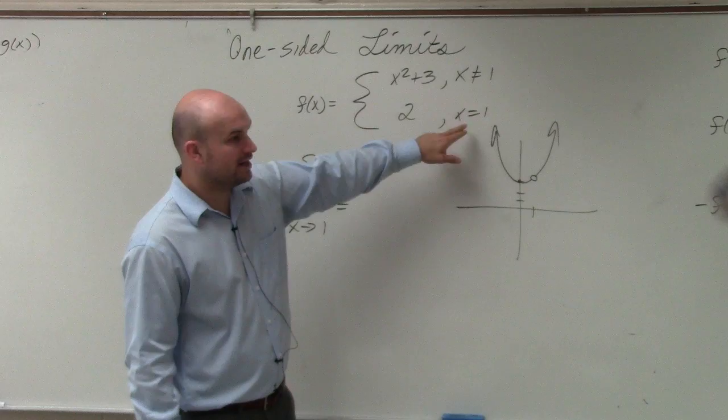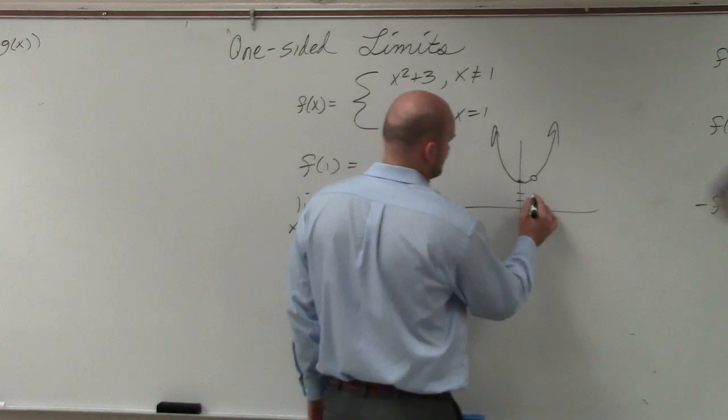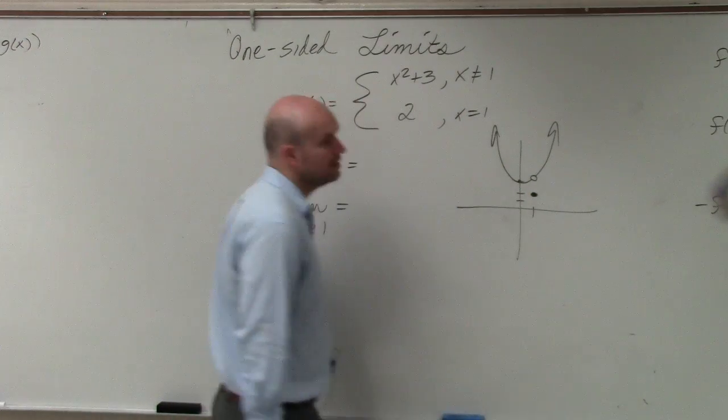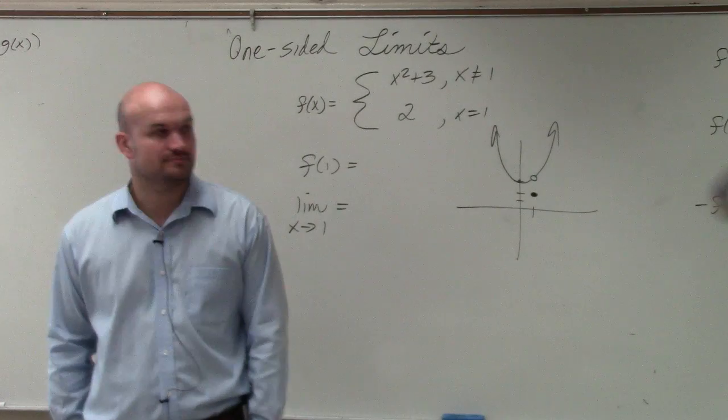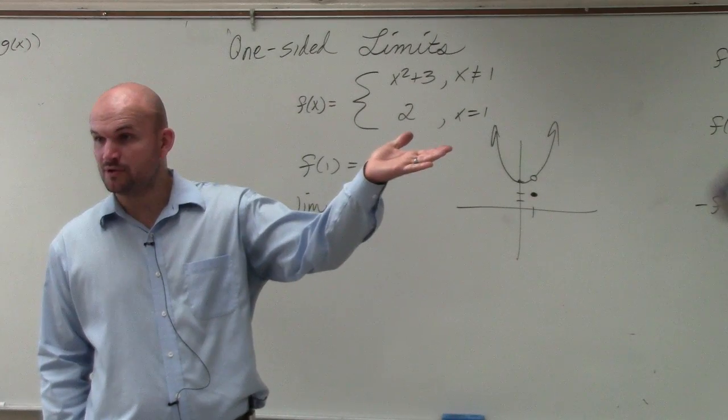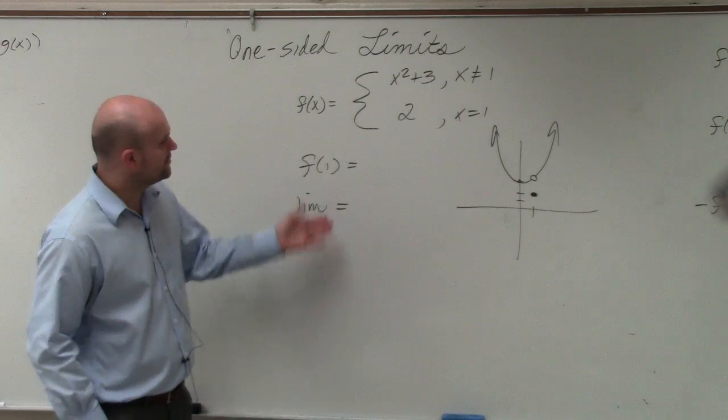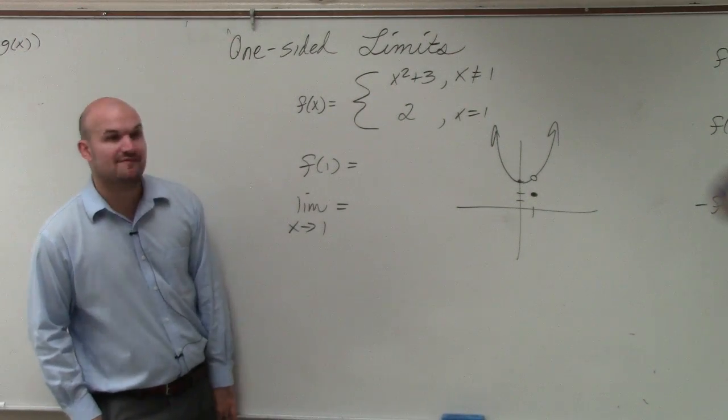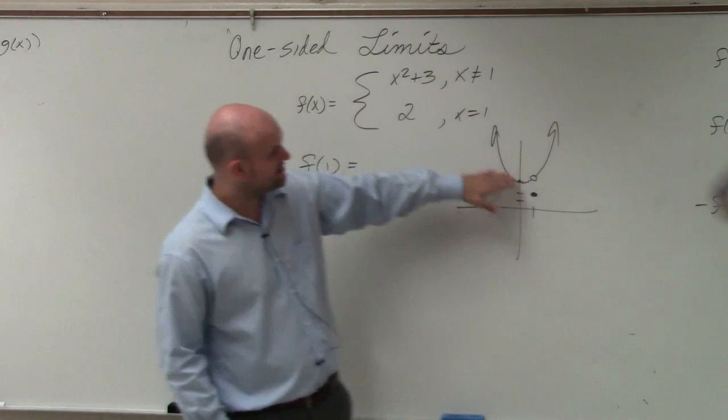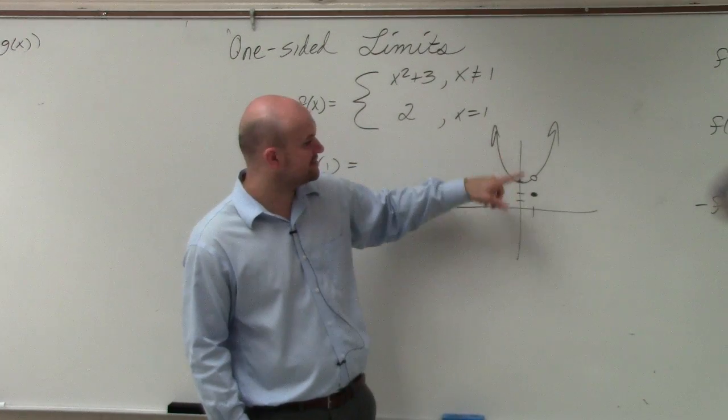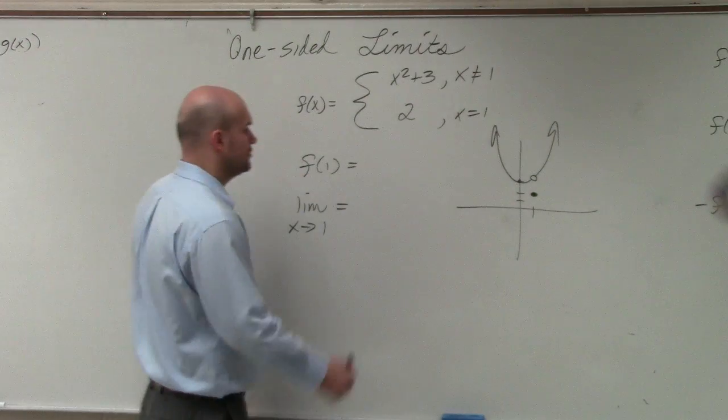But the function at 1 is equal to 2. So that's what that graph looks like, kind of similar to something we've explored. So if I was going to ask you what is the value of the function at f of 1, well, obviously on this function we see there's a hole, but we can see that there's the value at 2.